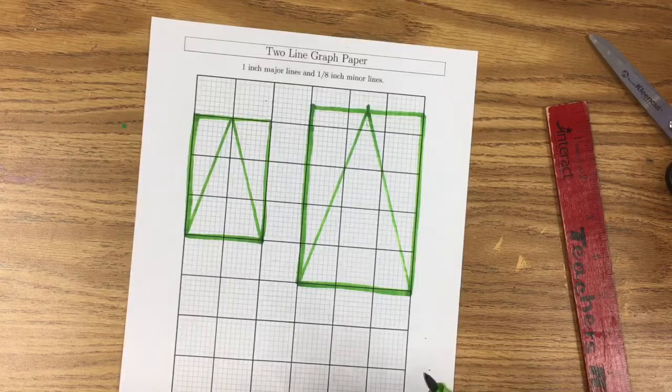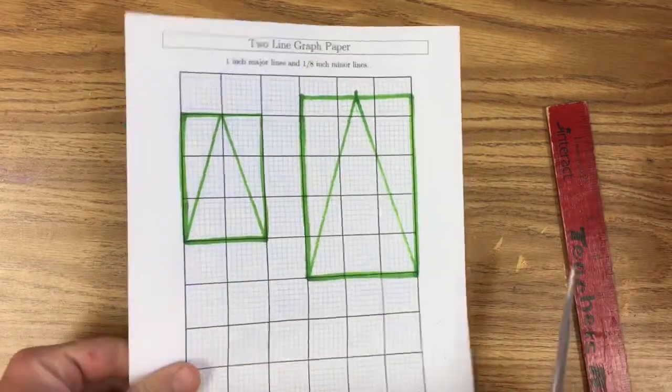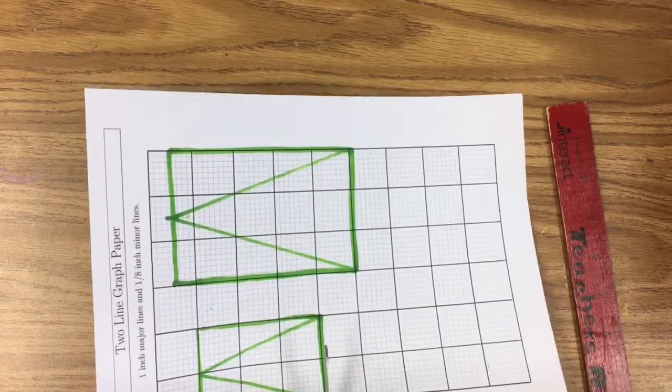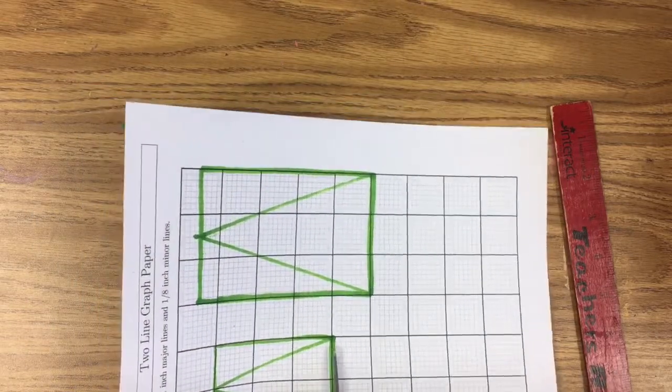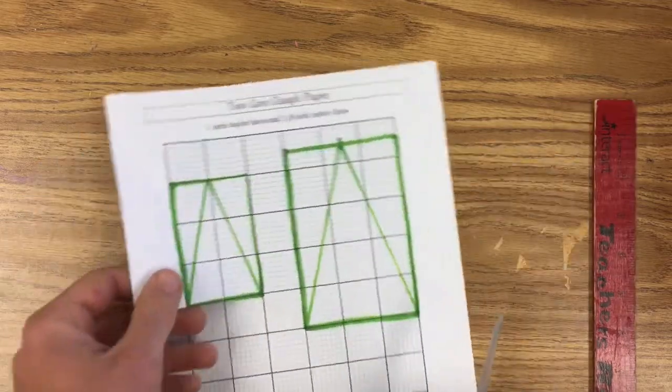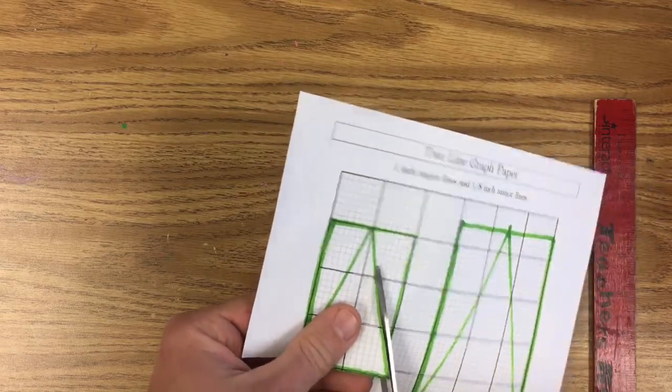Now once you have your sublime triangle, you need to go ahead and cut this out because we're going to use this to form the pentagon shape. And I'm just going to cut out the other guy here. It'll be especially neat when you cut this one out because you're going to have to trace it several times to get your pentagon.